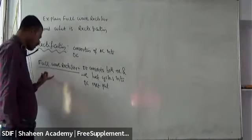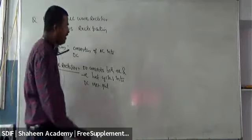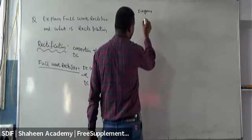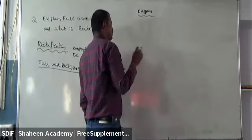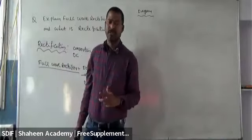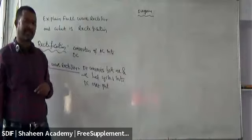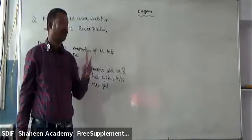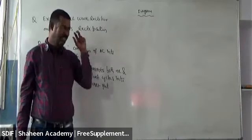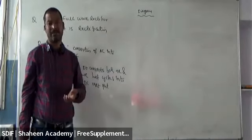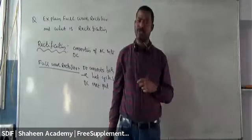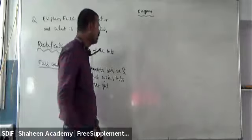Now let's see the full wave rectifier circuit diagram and how it converts both positive and negative cycles into output. In a full wave rectifier, basically two PN junction diodes are present along with a transformer — a little bit different compared to the half wave rectifier. Half wave rectifier uses only one single diode, but full wave rectifier uses two diodes connected along with a center-tapped transformer.